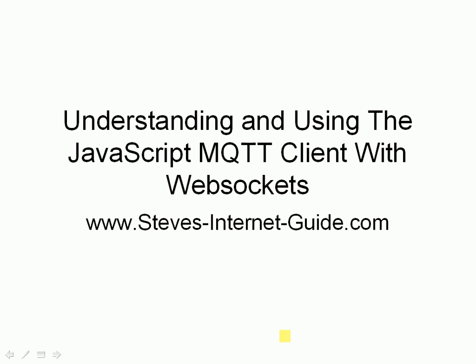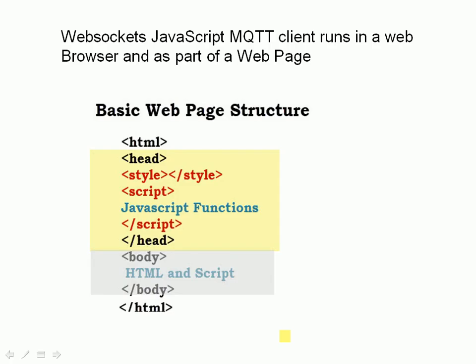Here from Steve's Internet Guide, and in this video I'm going to take you through understanding and using the JavaScript MQTT client with WebSockets. The client runs in the web browser as part of a web page. The first thing you have to do is create a basic web page. I'm going to create the scripts as simple as possible using very basic HTML and very basic JavaScript.